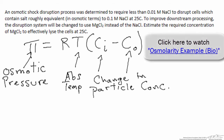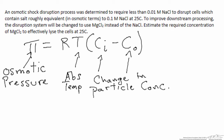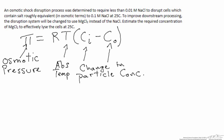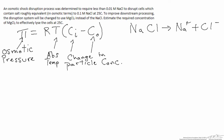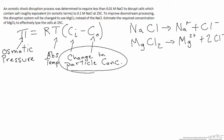The Van't Hoff law is entirely governed by the concentration change of particles in solution. Sodium chloride dissociates into one sodium and one chloride, giving us two moles of particles. Magnesium chloride goes from one mole into three moles of particles — one mole of magnesium and two moles of chloride. The fact that these two compounds break into different numbers of moles of particles in solution means we're changing the overall driving force for osmotic pressure, so the required moles of magnesium chloride will be different from the moles of sodium chloride originally used.